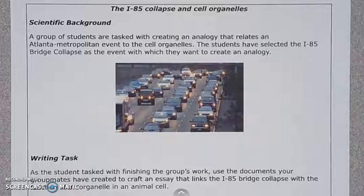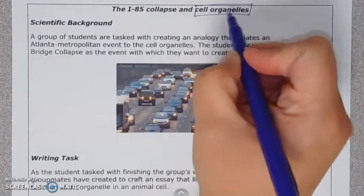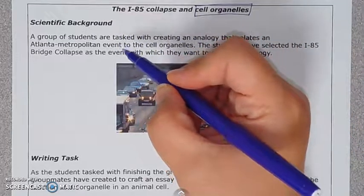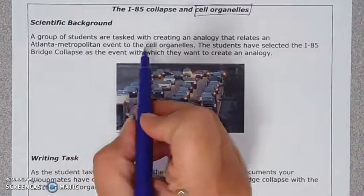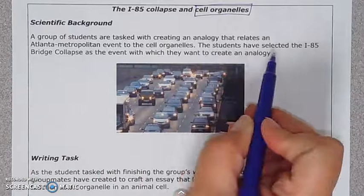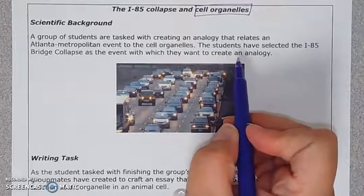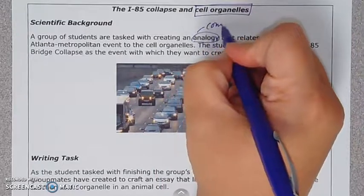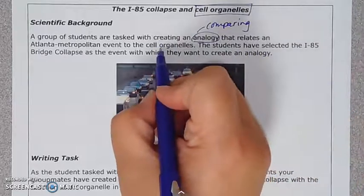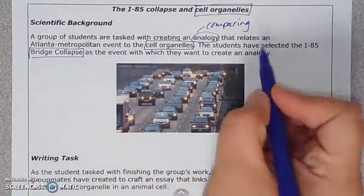First, read the title: 'The I-85 Collapse and Cell Organelles.' Then go down to the background and read it while making notes and underlining key words. The background says a group of students are tasked with creating an analogy relating an Atlanta metropolitan event to cell organelles. They've selected the I-85 bridge collapse. I'm going to circle the word 'analogy' because it tells me I'll be comparing two things — cell organelles to something related to the bridge collapse.